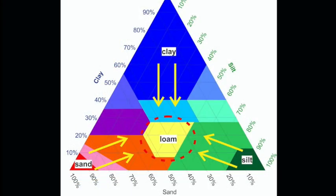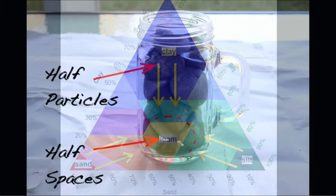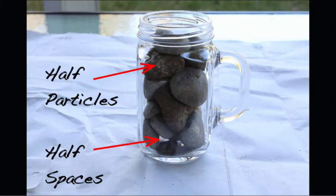Gardeners favor loamy soils because they're a mixture of different-sized particles, and they get the best characteristics of each particle size — the drainage of the sands, and the nutrient-holding ability of the silts and clays. An ideal topsoil will have a mixture of sand, silt, clay, and organic matter that results in half of the volume coming from the solid soil particles, and the other half of the volume coming from the space between the particles.